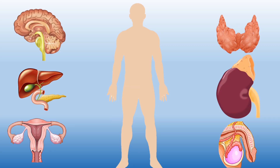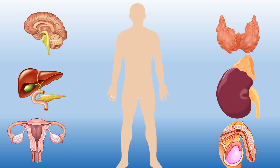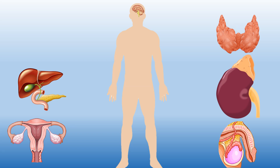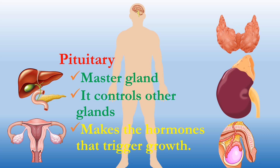Let us study the detail about hormone-producing glands — where each is located and what its function is. In the brain area, a small gland is present that we call the pituitary gland. It is also called the master gland because it controls other glands, and it makes the hormones that trigger growth.